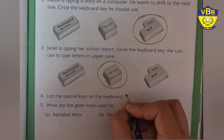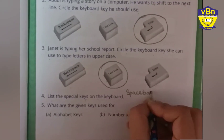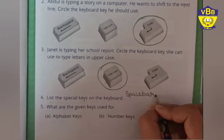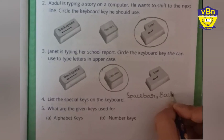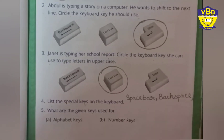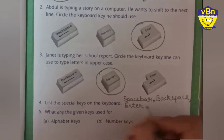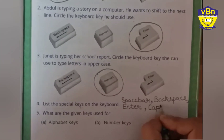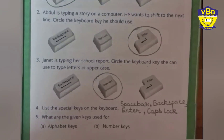So we have to write here. First we will write: space bar — S-P-A-C-E-B-A-R. Then we will write backspace — B-A-C-K-S-P-A-C-E. Then we will write enter — E-N-T-E-R. Then last, caps lock — C-A-P-S-L-O-C-K. Done? I hope you all are done.